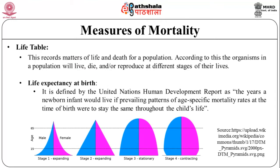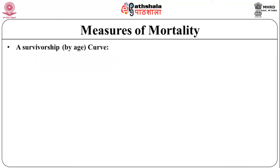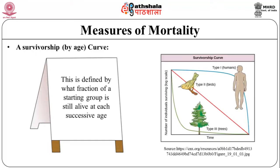Life table: this records matters of life and death for a population. According to this, organisms in a population will live, die or reproduce at different stages of their lives. Life expectancy at birth is defined by the United Nations Human Development Report as the years a newborn infant would live if prevailing patterns of age-specific mortality rates at the time of birth were to stay the same throughout the child's life. A survivorship-by-age curve is defined by what fraction of a cohort from a starting group is still alive at each successive age.